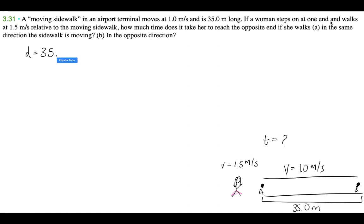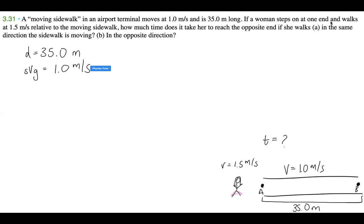So the distance is 35.0 meters. And we know that the speed of the sidewalk — well, it has to be relative to something. So I'm just going to say ground. The sidewalk relative to the ground is equal to 1.0 meters per second. And then the woman steps on and her speed is relative to the moving sidewalk — so the woman's speed relative to the sidewalk is going to be 1.5 meters per second.